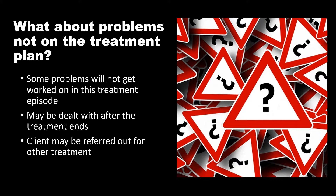What about problems that are not on the treatment plan? Some problems will not get worked on during the current treatment episode. They may be dealt with after the treatment ends, or the client may be referred out for other treatment. For example, a client may have financial issues — unpaid fines, fees, or past-due bills. While in treatment they may not be able to do anything about this, but after initial sobriety is achieved and they have found employment, then they will begin to develop a plan for that. Also, the client may have physical or emotional issues that need to be treated and may need to be referred out for those kinds of treatment.